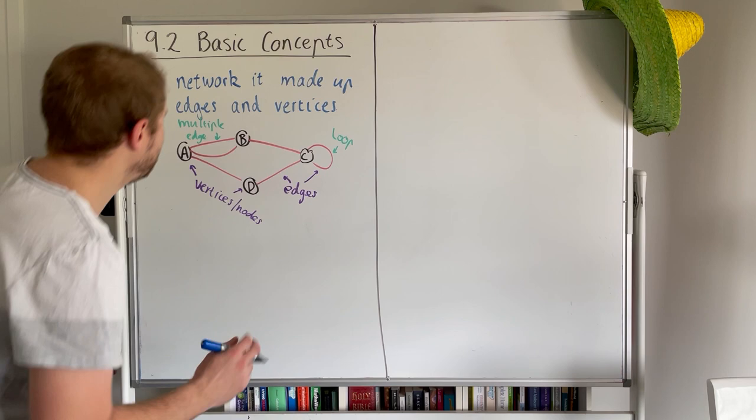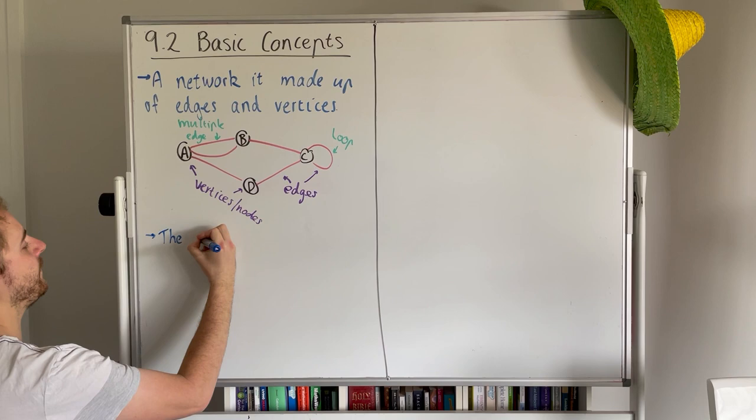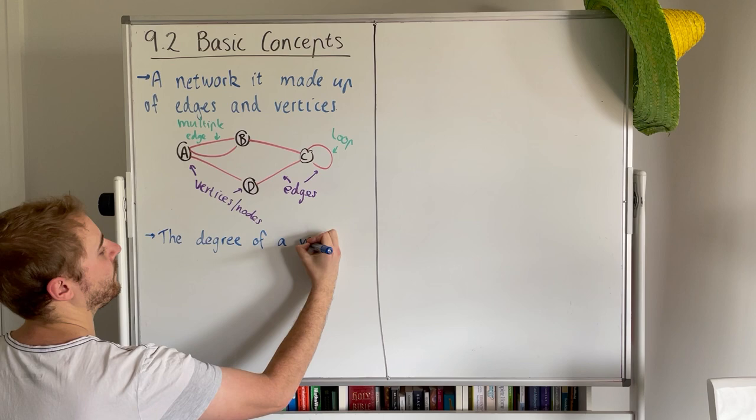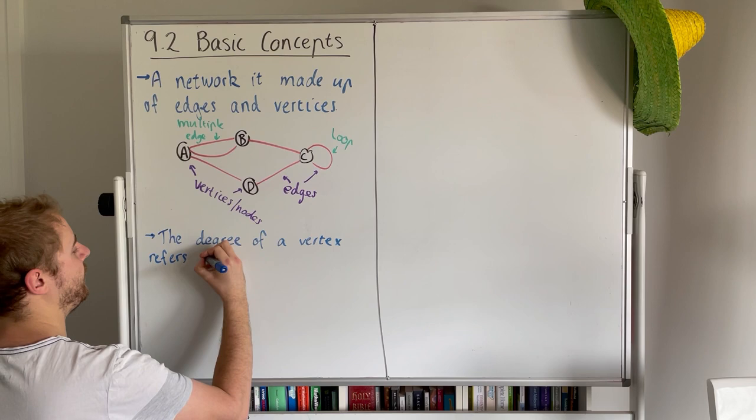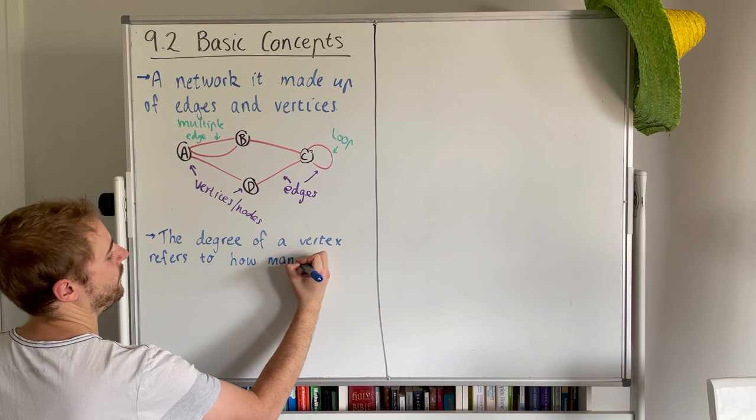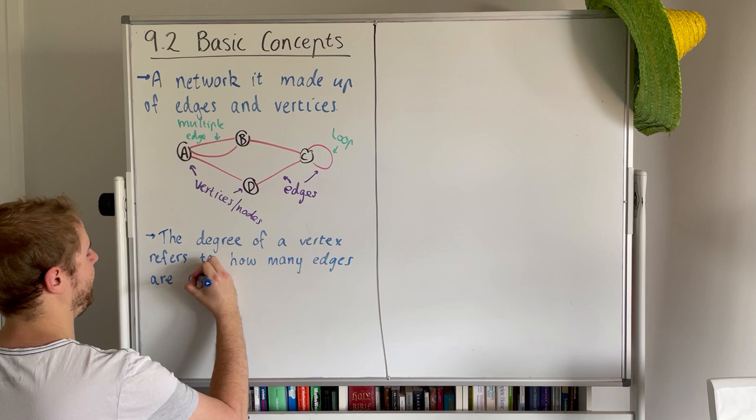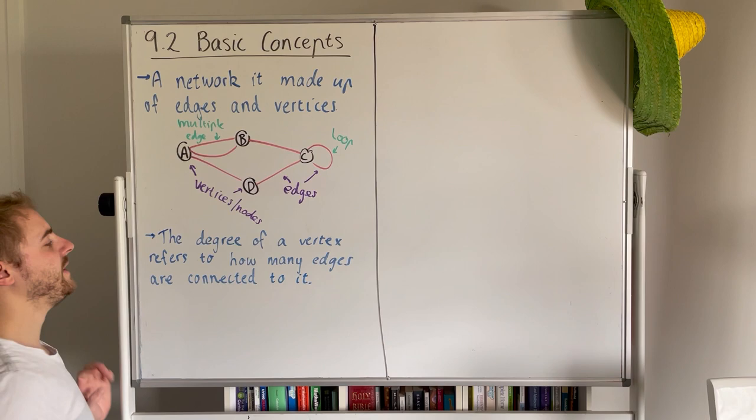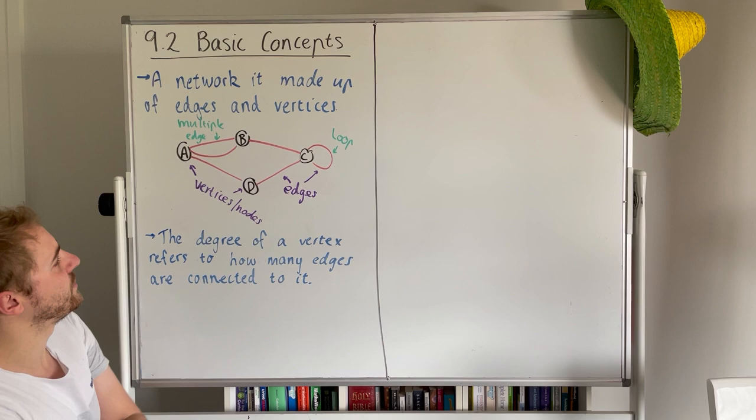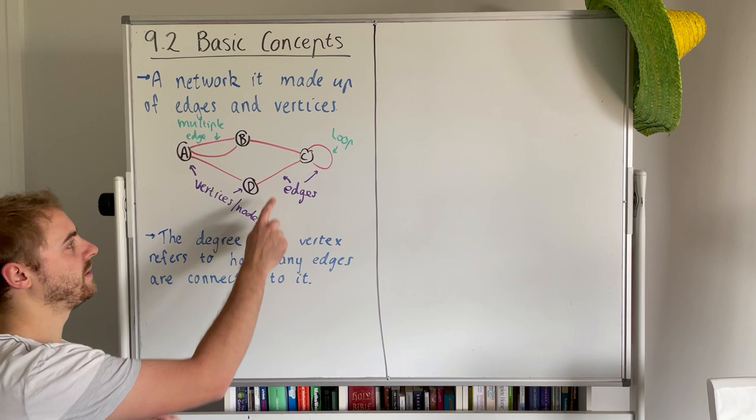Now when looking at the vertices, a thing that we often analyze is what's called their degree. So the degree of a vertex refers to how many edges are connected to it. We'll use the same example drawn up here. The degree of vertex D is two because we have two edges connecting to it. The degree of vertex B is three.